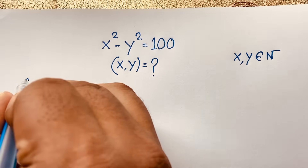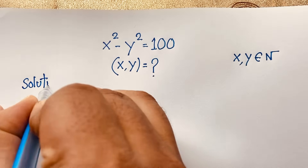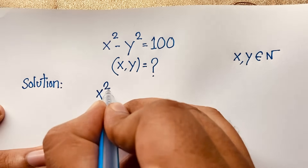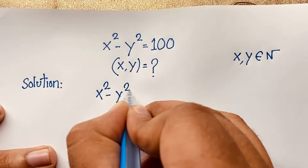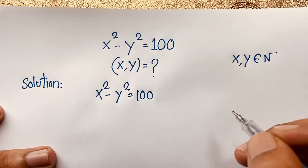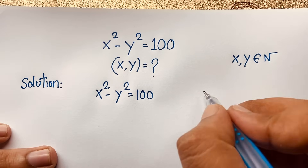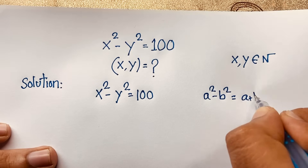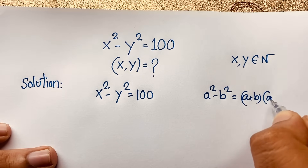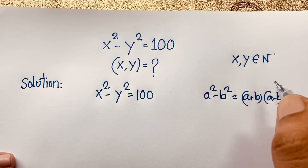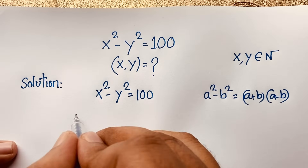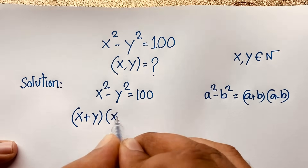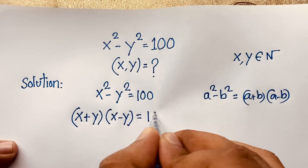For our solution, we start with x squared minus y squared equals 100. We know that a squared minus b squared equals (a plus b)(a minus b). Using this formula, we can write this expression as (x plus y) times (x minus y) equals 100.